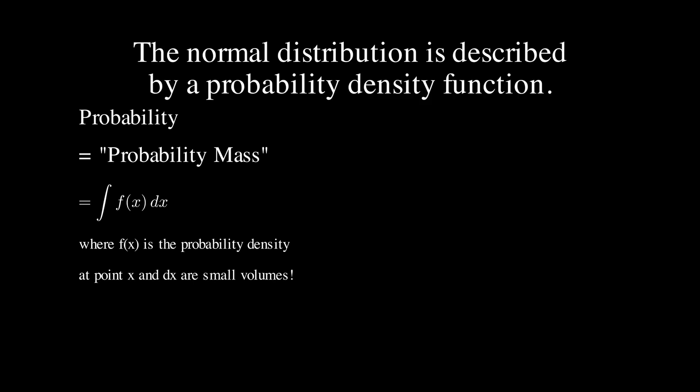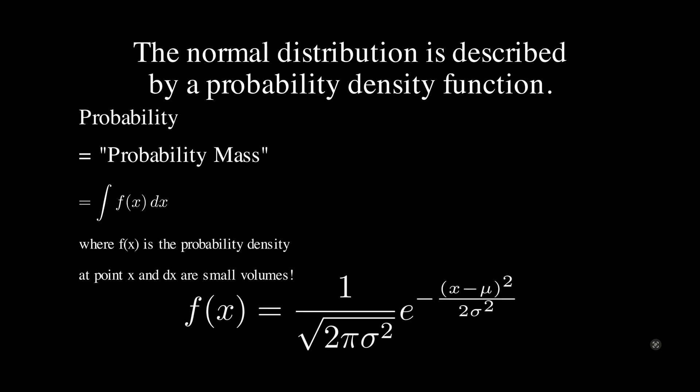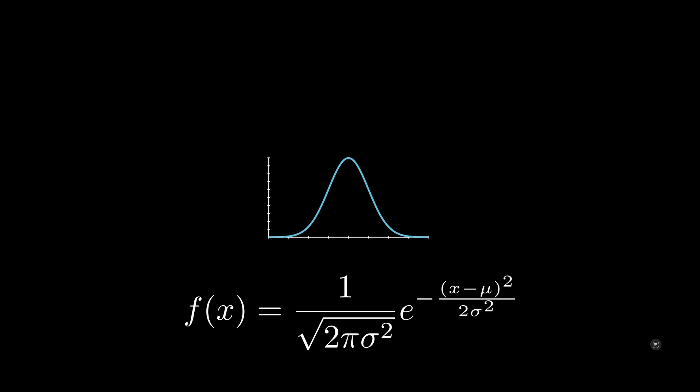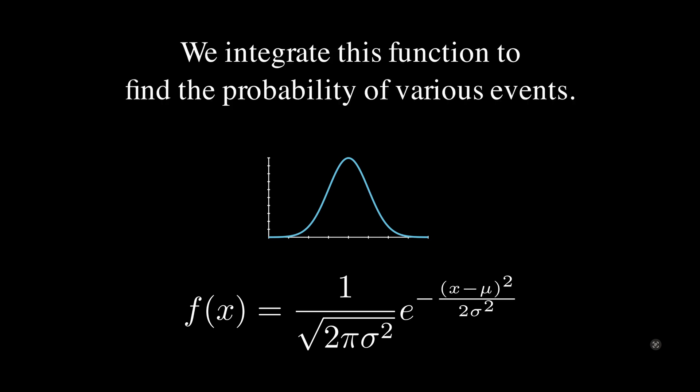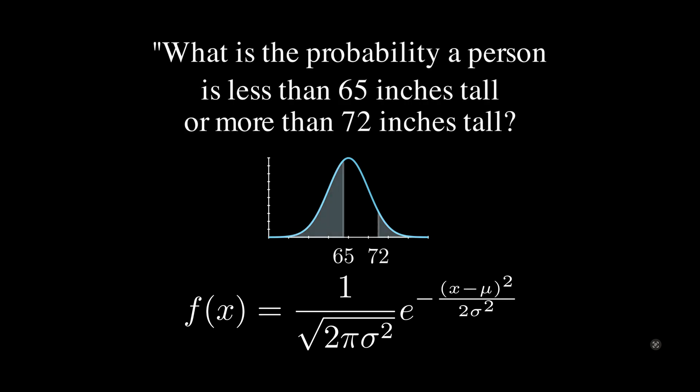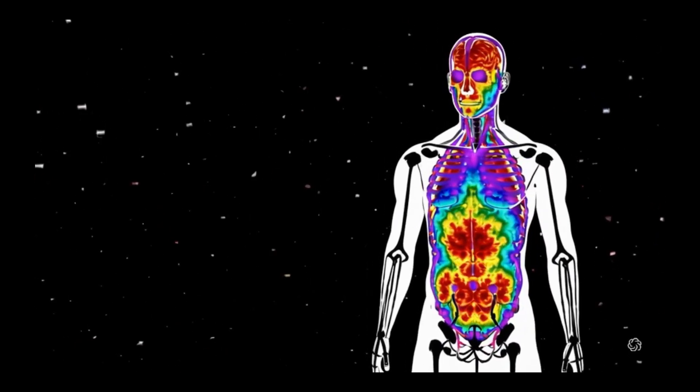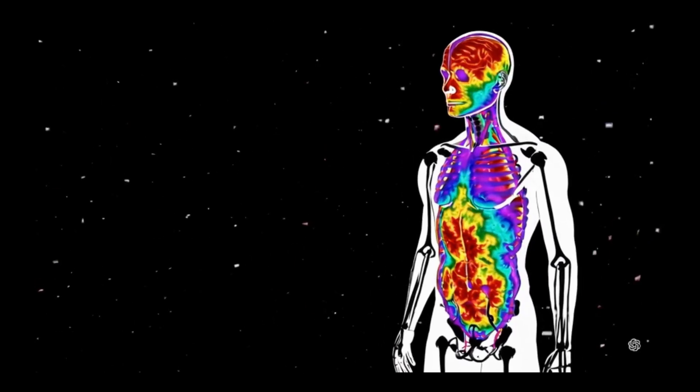We integrate the probability density over the volume whose probability mass we want to find. The normal distribution is described by a probability density function. The function is relatively complicated, but at least we can write it down, unlike the magic probability box. We integrate this probability density function to find the probability of various events. So to find the probability of a person being less than 65 inches tall or more than 72 inches tall, we simply integrate this function over that area — the area under the curve. This is generally how we find probabilities in continuous distributions.